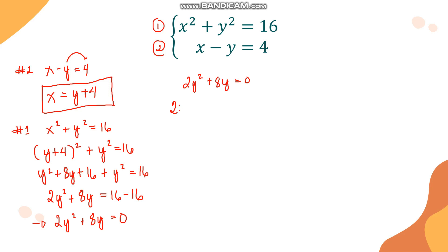This gives 2y(y plus 4) equals 0. Since we have two factors, 2y and y plus 4, we equate both to zero and solve. From 2y equals 0, dividing by 2 gives y equals 0. From y plus 4 equals 0, we get y equals negative 4. These are the two values of y.